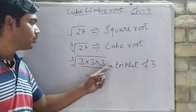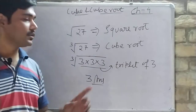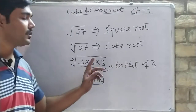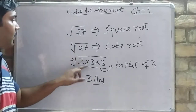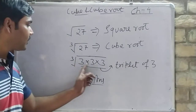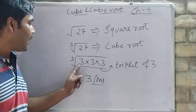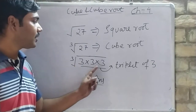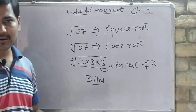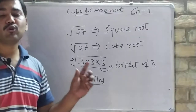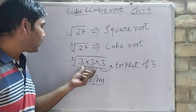So 27 is 3 × 3 × 3. We have done the prime factorization, and the prime factor is 3. Here, 3 forms a triplet. So the cube root will come from the triplet.